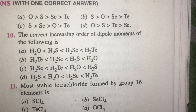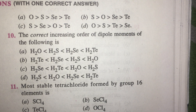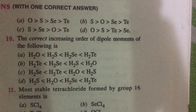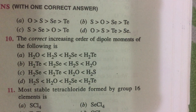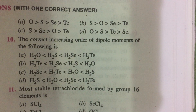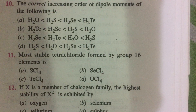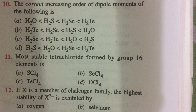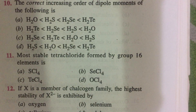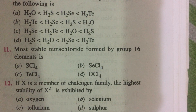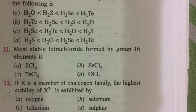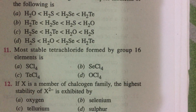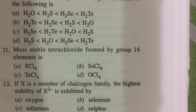The most stable tetrachloride formed by a group 16 element is tellurium tetrachloride, TeCl4. Sulfur and selenium tetrachlorides undergo hydrolysis and are not stable. Oxygen will never form OCl4. Regarding the chalcogen family (group 16), the highest stability of X2- ions is shown by the oxide ion, because oxygen is the most electronegative.